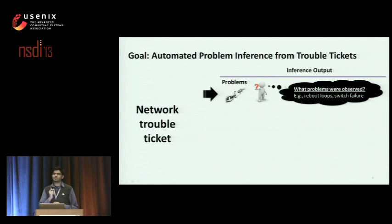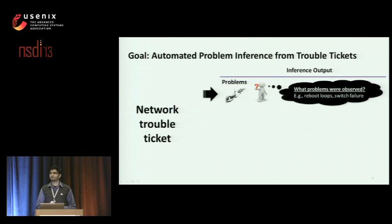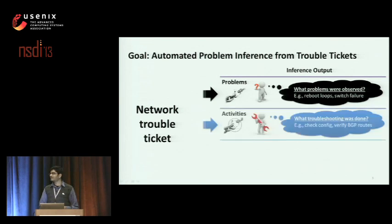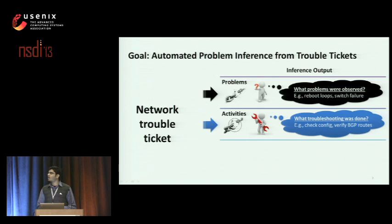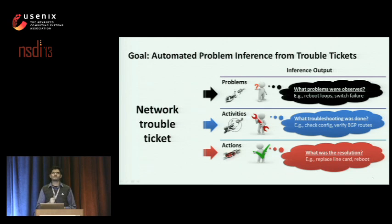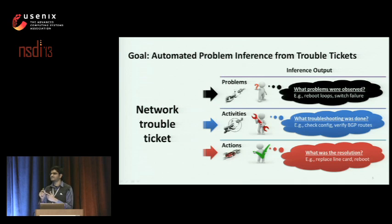Towards this goal, we want to infer three key features from a given ticket: problems, activities, and actions. First, what problems were observed? Did the device get stuck in a reboot loop or did it fail? Second, what debugging was done? Did the operator check for any recent configuration changes, or did they verify BGP routes in the routing table? And finally, what was the fix to mitigate the problem? Did they replace the line card or the entire device itself? Given a ticket, we want to infer these three key features: problems, activities, and actions.